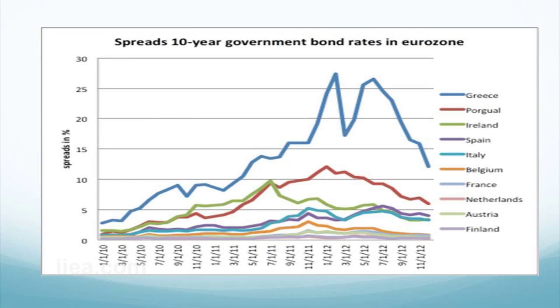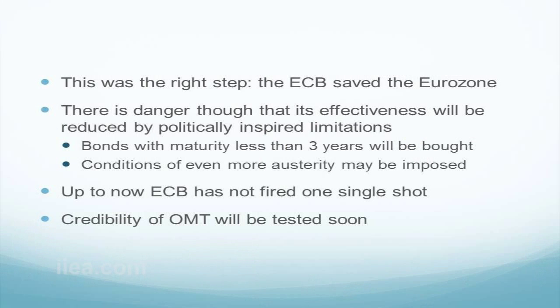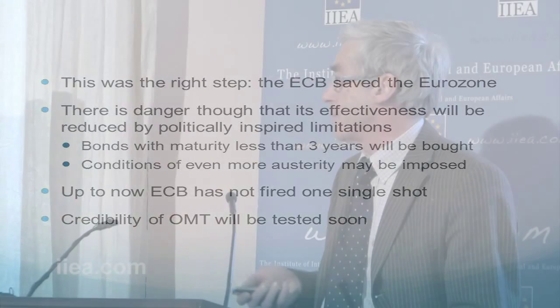In defending OMT, Draghi used the same kind of analysis I have been using — that large parts of the Euro area are in a bad equilibrium with self-fulfilling expectations that feed on themselves, and the central bank has the capacity to stop this. The effects have been spectacular: since the announcement, spreads have gone down dramatically, with the highest spreads seeing the strongest decline. I think this was the right step — the ECB in fact saved the Eurozone. But I still feel uncomfortable because too many conditions have been attached, and austerity has been too intense.